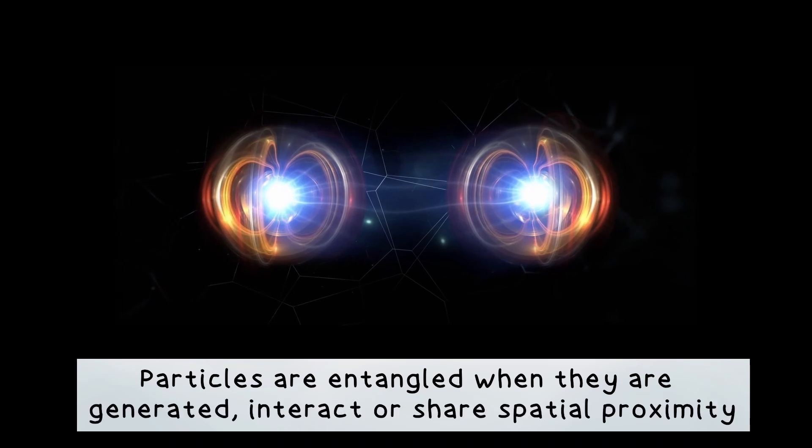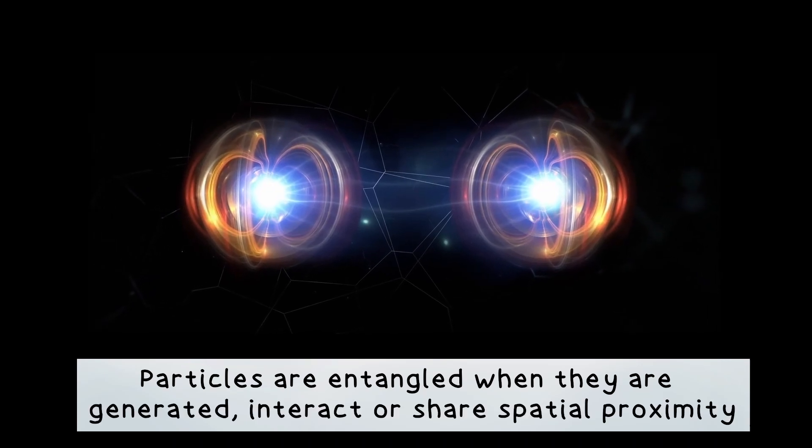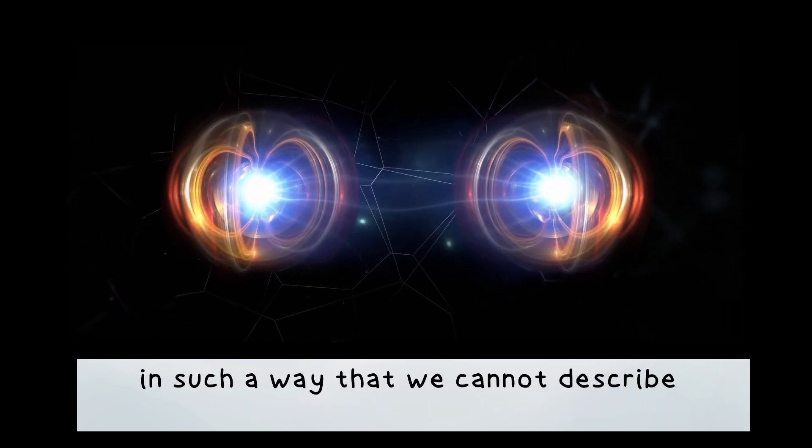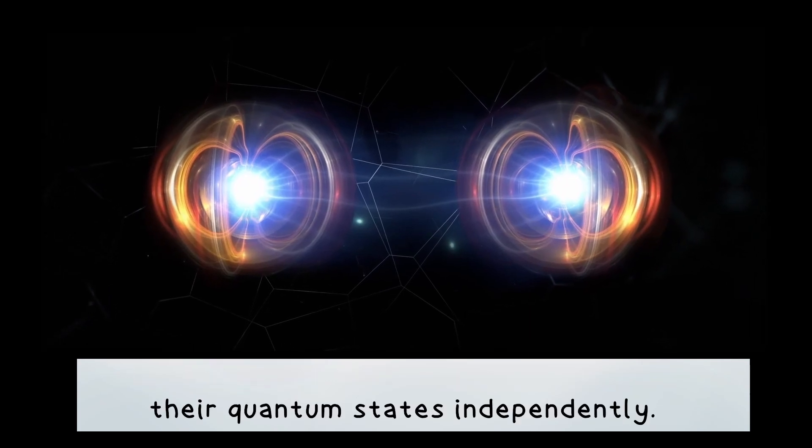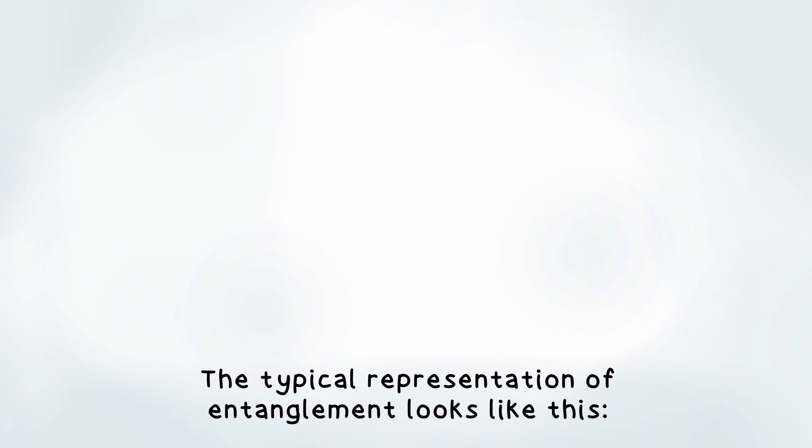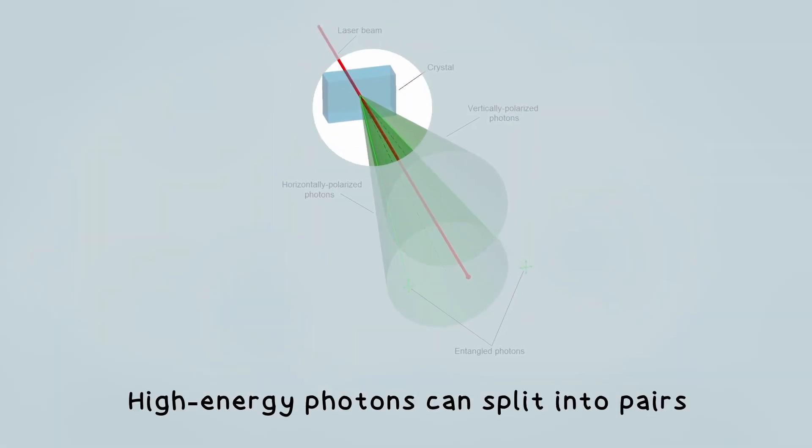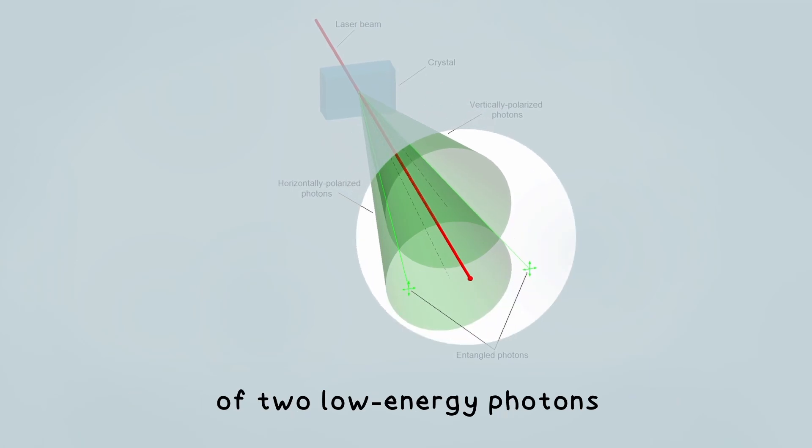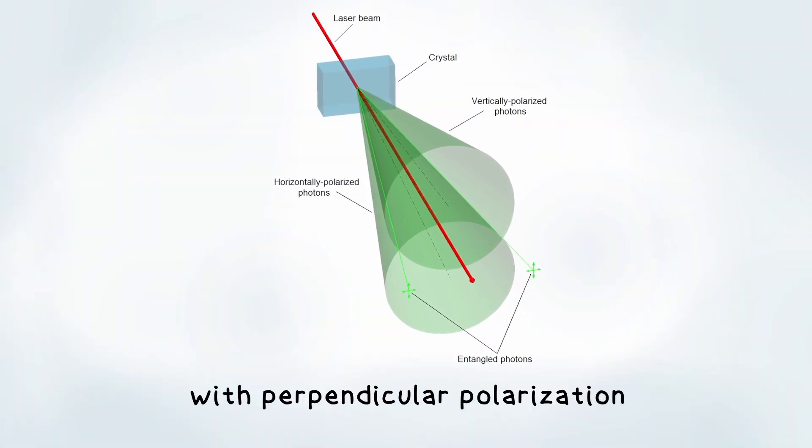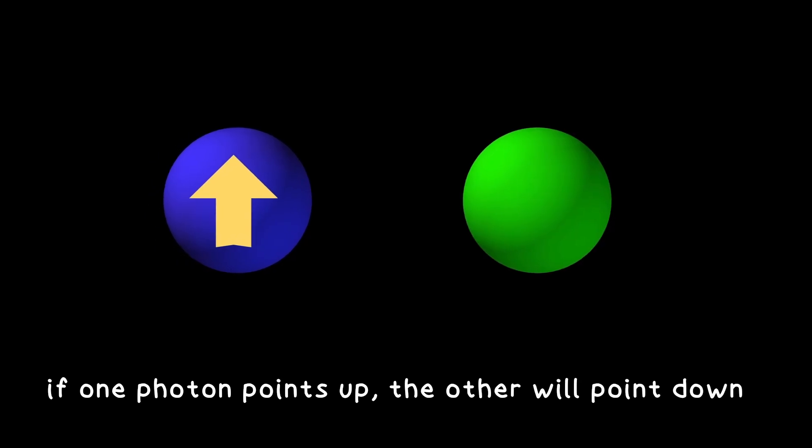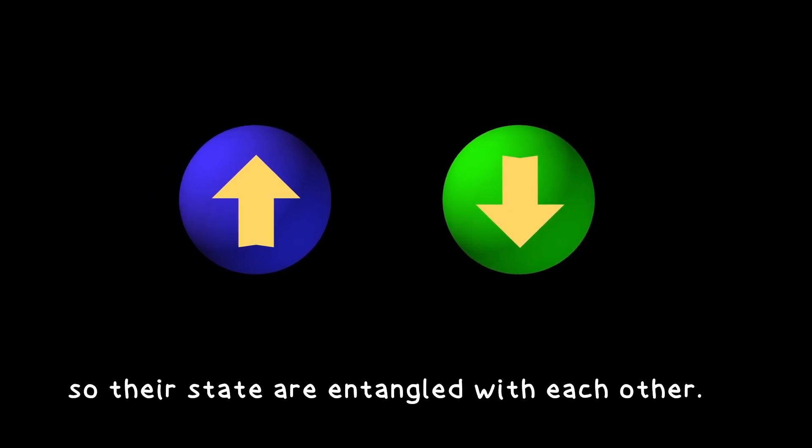Particles are entangled when they are generated, interact or share spatial proximity in such a way that we cannot describe their quantum states independently. The typical representation of entanglement looks like this. A laser is sent through a crystal. High energy photons can split into pairs of two low energy photons with perpendicular polarization. This means that if one photon points up, the other will point down, so their states are entangled with each other.